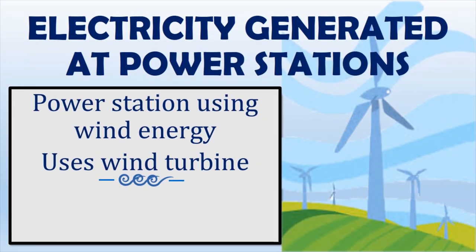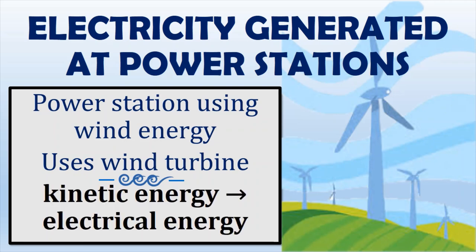The second type is the wind energy power station. Wind turbines work on a simple principle: instead of using electricity to make wind like a fan, wind turbines use wind to make electricity. Kinetic energy is converted to electrical energy — wind turns the propeller-like blades of a turbine around a rotor, which spins a generator that then creates electricity.